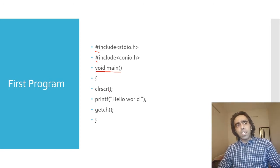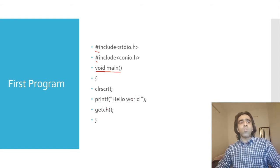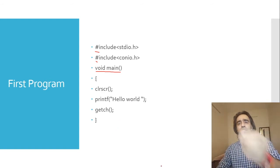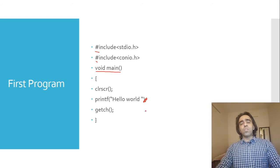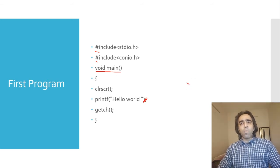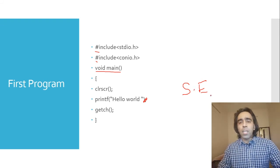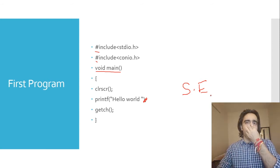Looking at a practical example: we have a program with clrscr, printf to print 'hello world', and getch. This program gives us the desired output. But if a semicolon is missing or misplaced, when we compile there is an error and we cannot run the program — that is a syntax error.